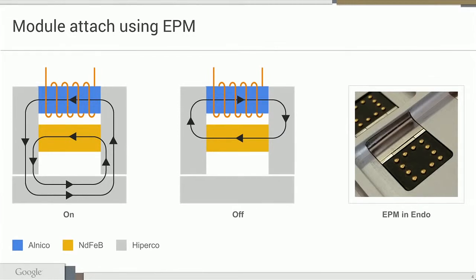The blue material is alnico, a material whose magnetic field can be much more easily changed by an external influence. A short pulse through the coil changes the direction of the magnetic field through the alnico — in the left picture the arrow points left, and in the right picture it points right. The pulse changes the direction through the alnico, making the magnetic field either stay entirely inside the device when it's off, or go out into the module when it's on.